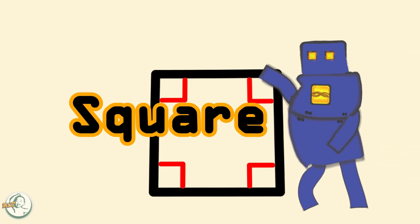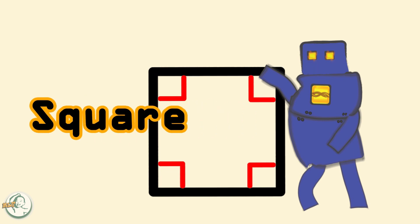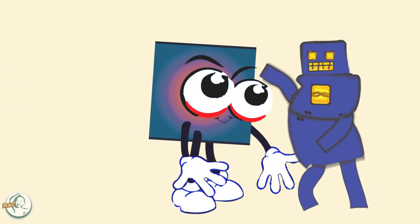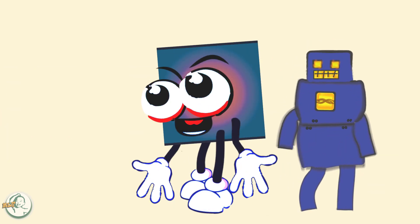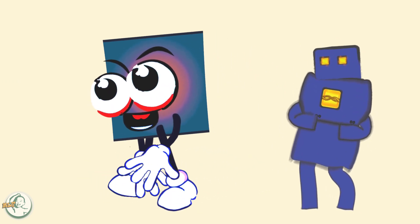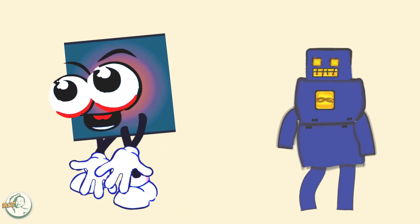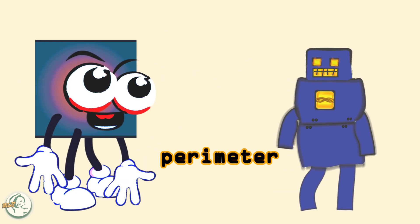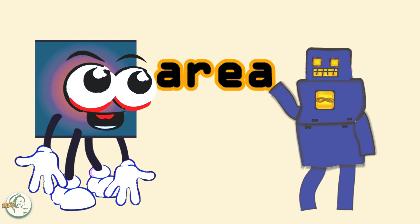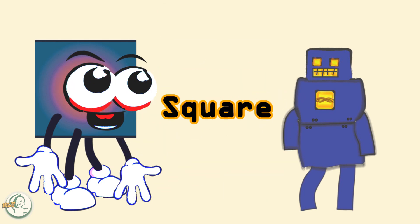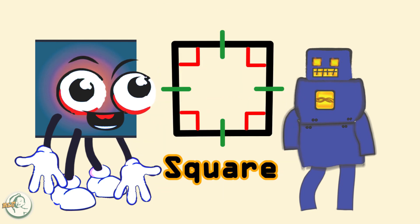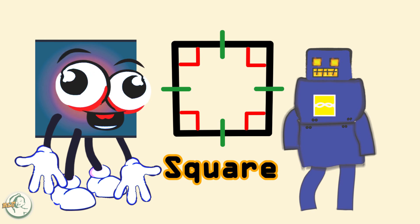Understanding the properties of a square is important because it helps us recognize the shape and distinguish it from other shapes. It also lays the foundation for learning about other geometric concepts, such as perimeter, area, and volume. So next time you see a square, remember its unique properties and what makes it so special.